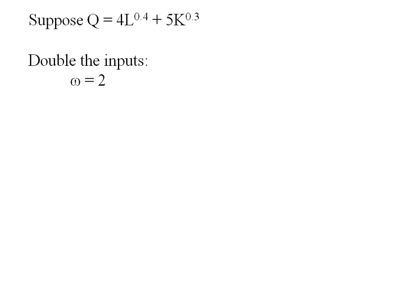Here's another production function. Let's let omega be 2. Let's double our inputs. So every time I see an L I need to plug in a 2L. And every time I see a K I need to plug in a 2K.